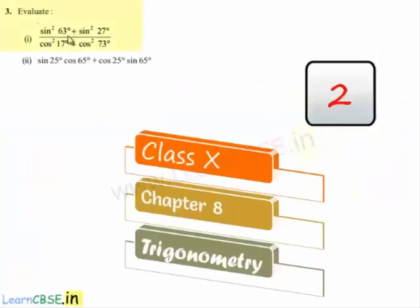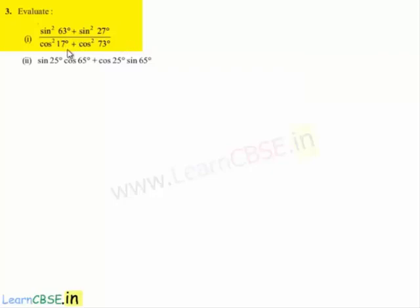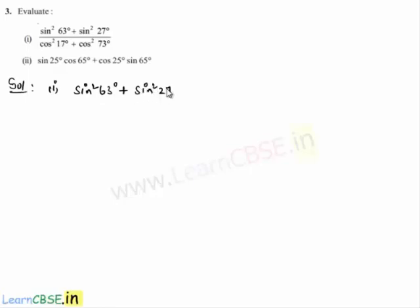Moving on to the third sum, evaluate the first bit: sin²63° + sin²27°, whole divided by cos²17° + cos²73°.